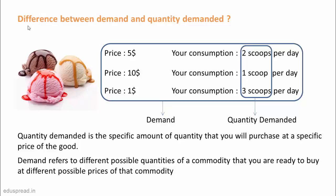The demand changes when the relation between price and quantity demanded changes. There are many determinants that affect this relation. For example, income — what would happen to your demand for ice cream if you lose your job? It would decrease, right? Even if the price remains at $5 per scoop, you might reduce your consumption to one scoop, or maybe switch to no ice cream at all. Like income, there are other determinants as well which affect the relation between price and quantity demanded. We will talk about these determinants in the upcoming lectures.